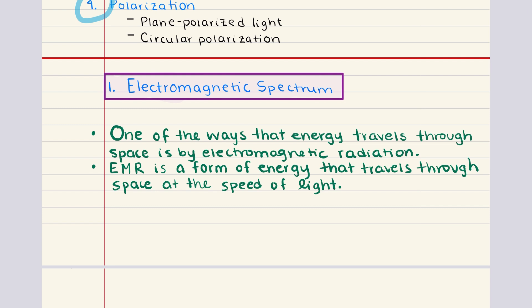We're going to begin with discussing the electromagnetic spectrum. One of the ways that energy travels through space is by electromagnetic radiation, or EMR — a form of energy that moves as oscillating electric and magnetic fields, propagating at the speed of light. These oscillations are perpendicular to each other and to the direction of the wave's travel, making electromagnetic radiation unique in its ability to carry energy across vast distances, even through a vacuum.